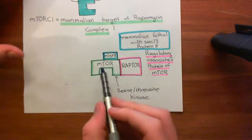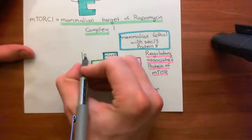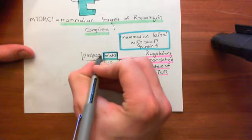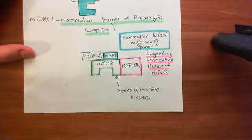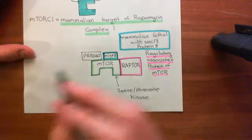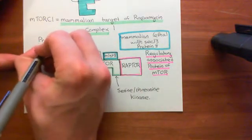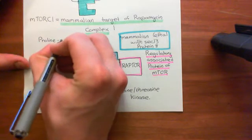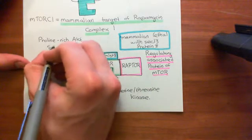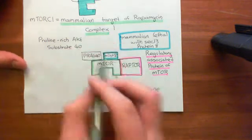Also attached to mTOR we have a protein called PRAS40. PRAS40 stands for the proline-rich AKT substrate 40. PR stands for proline-rich, A stands for AKT — which is another name for protein kinase B — S stands for substrate. So PRAS40 is the proline-rich AKT substrate 40.